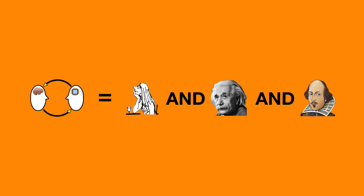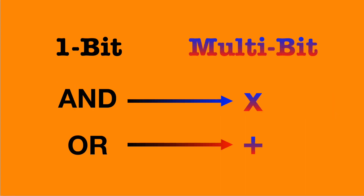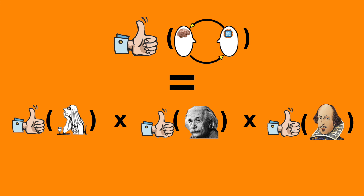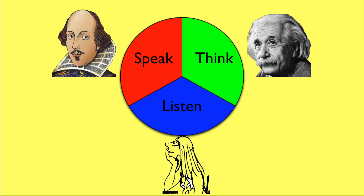We can express this idea in logical terms: a good interaction requires good listening, and good thinking, and good speaking. Here's a little trick you might not have known. When you transform one-bit Boolean logic into multi-bit arithmetic logic, the AND operator transforms into multiplication, and the Boolean OR operator transforms into addition. Thus, the quality of the interaction is equal to the quality of the listening multiplied by the quality of the thinking multiplied by the quality of the speaking. Therefore, good software requires a balance of good listening, good thinking, and good speaking.